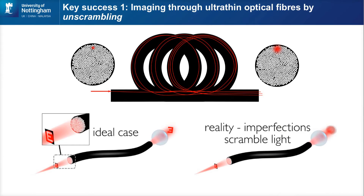Now I'll talk about the three key successes I've identified in this area. One really important thing is that holographic imaging has recently enabled the ability to image through ultra-thin optical fibers despite the fact that they scramble light. For example, in a multi-core optical fiber commonly used in medical imaging, you send light down one core but it doesn't stay confined — by the time it reaches the end it's spread out, including phase shifts between different paths down the fiber.